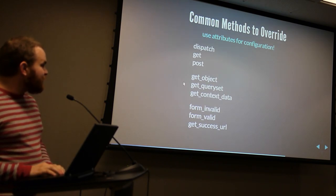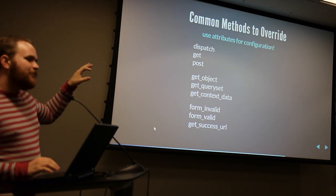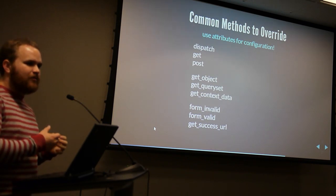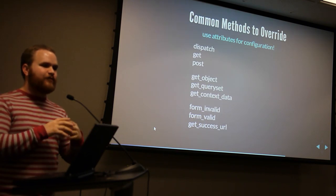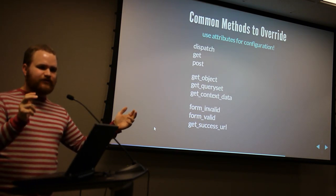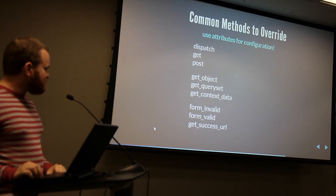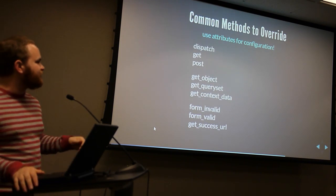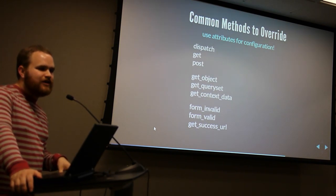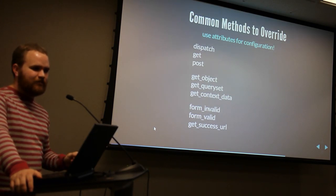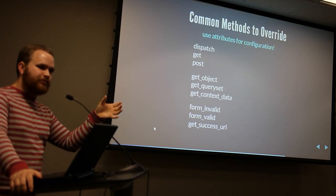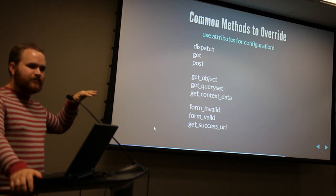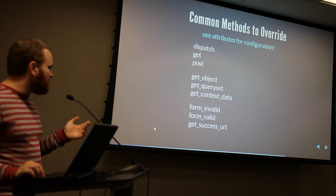get_object actually uses get_queryset. If you're familiar with the Django ORM, the queryset is a set of all possible objects you're looking through. One use case: say you want people to only modify blog posts that they wrote. In get_queryset, you could filter blog posts to only their posts, so you wouldn't have to worry about them accidentally editing someone else's blog posts.